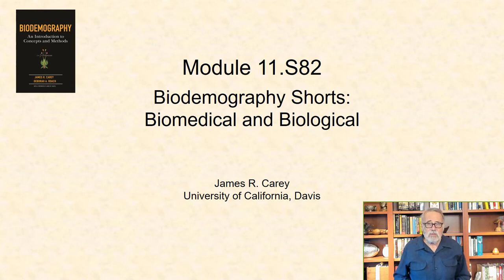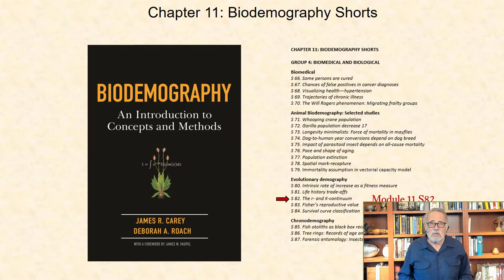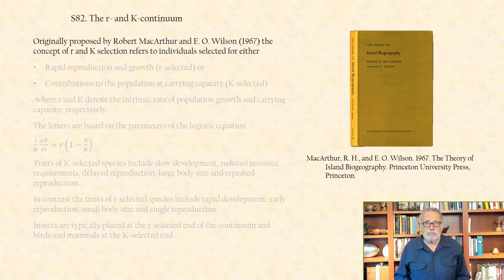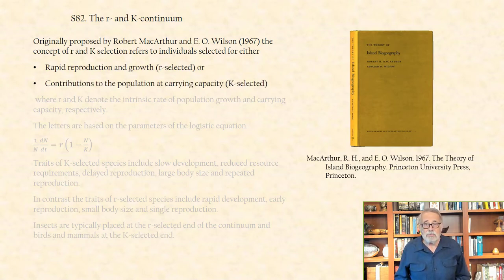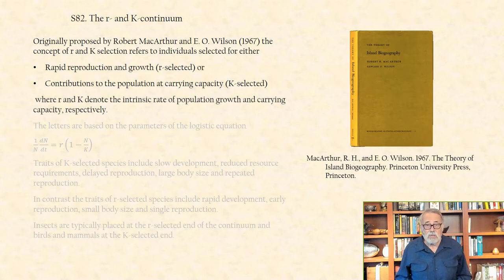In this bio-demographic short, I consider the R and K continuum. Originally proposed by Robert MacArthur and E. O. Wilson in 1967, the concept of R and K selection refers to individuals selected for either rapid reproduction and growth, that is, R selected, or contributions to the population at carrying capacity, that is, K selected, where R and K denote the intrinsic rate of population growth and carrying capacity, respectively.